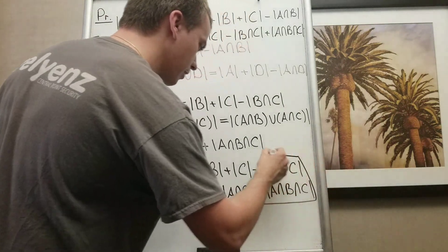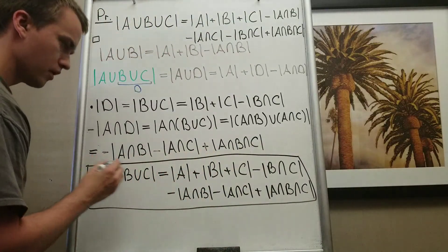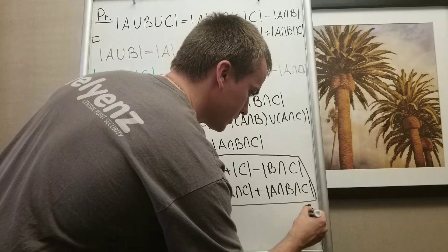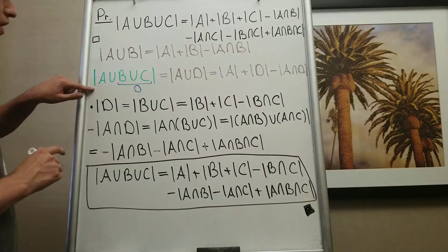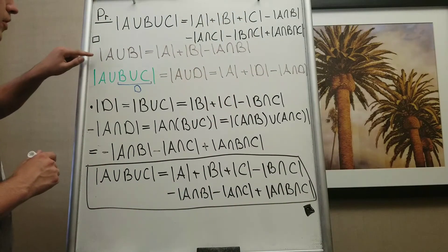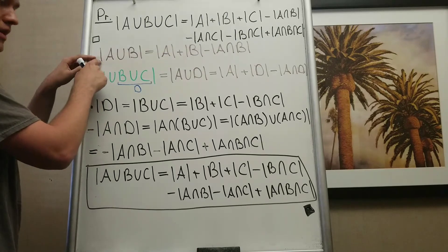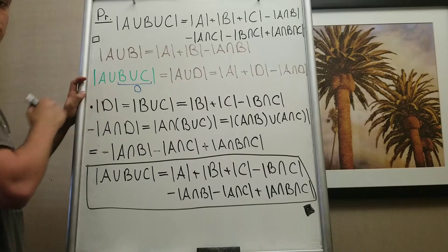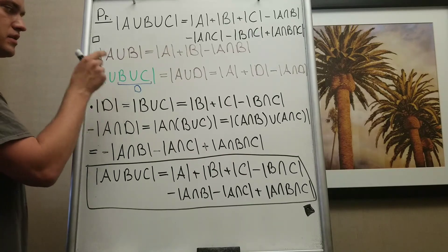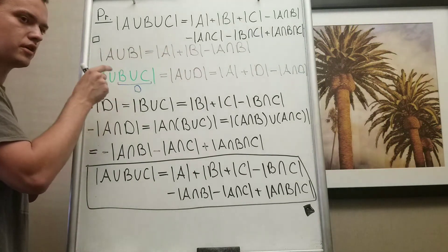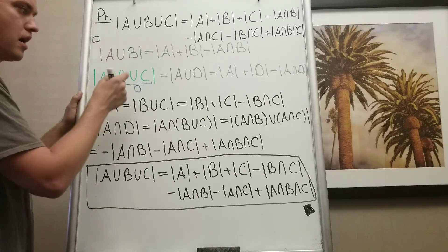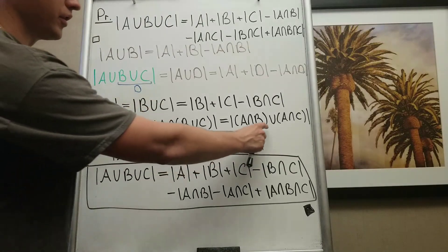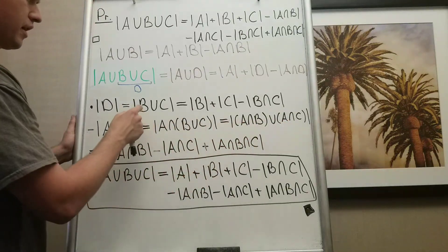The way we proved this reflects the main principle of doing mathematics: if you have a difficult problem, simplify it to a simpler case, solve the simpler case, and then use that solution to solve the more difficult case. Here, the cardinality of a union of three sets was simplified to the cardinality of a union of two sets.